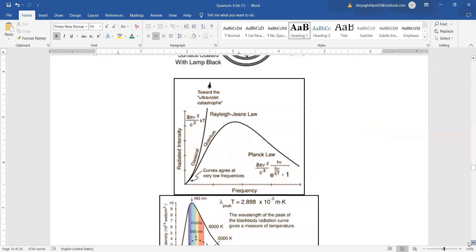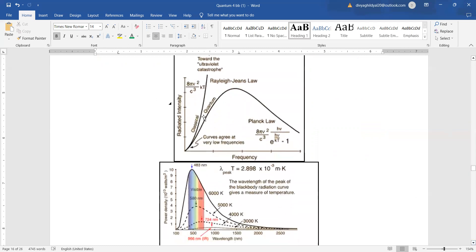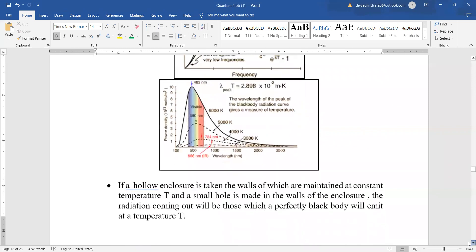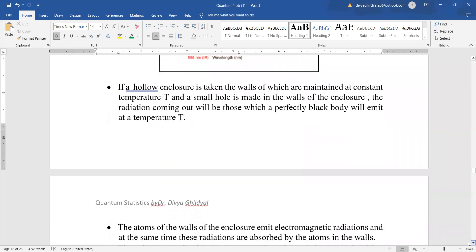We also remember studying that the black body radiation spectra show different variations at different temperatures. Under quantum statistics they follow Planck's laws, otherwise they reduce to classical laws and vary with temperature.